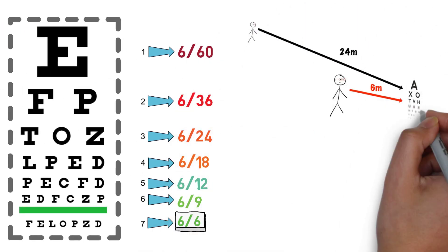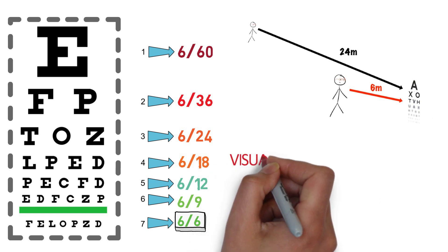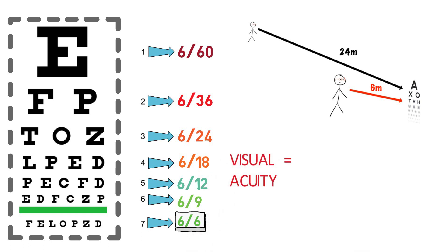Now, let us understand the meaning of this fraction. The numerator means the distance of the patient from the letters and the denominator means the distance from which a person with normal vision can read the letter. Suppose a patient is able to read only the first three lines and the vision is recorded as 6x24, it means the patient can read this line from a 6 meter distance while the normal person can read it from 24 meters.